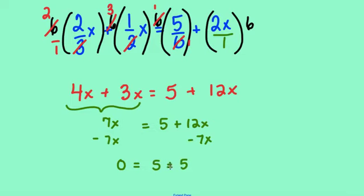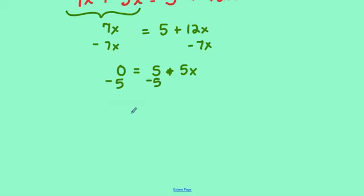And then I'm going to bring the 5 to the other side by subtracting it. And I get negative 5 equals 5x, and then I divide by 5. So negative 1 equals x.